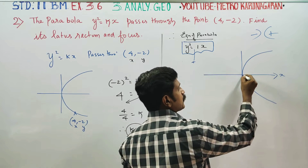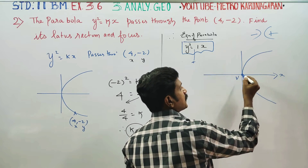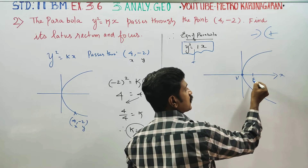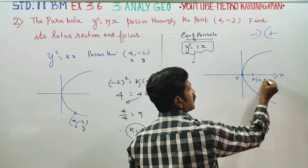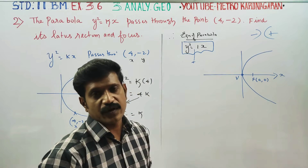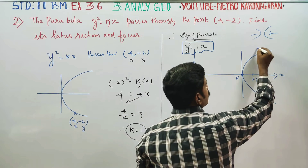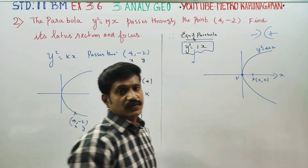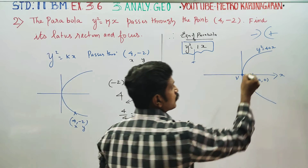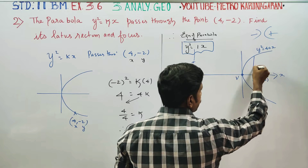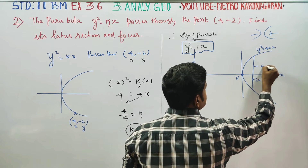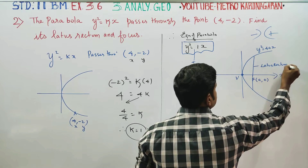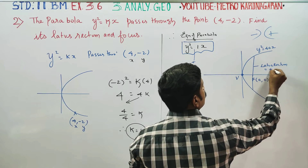This is the parabola — this is the vertex, and this is the focus. The formula for focus is (a, 0). The standard parabola formula is y² = 4ax. The latus rectum formula is 4a.